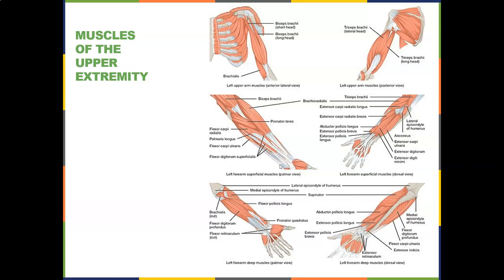Flexor carpi radialis, flexor digitorum superficialis. Here's the triceps brachii. Here's the extensor carpi radialis, extensor carpi radialis brevis, abductor pollicis longus, extensor pollicis brevis, extensor pollicis longus, lateral epicondyle of the humerus, extensor carpi ulnaris, extensor digitorum, and extensor digiti minimi.